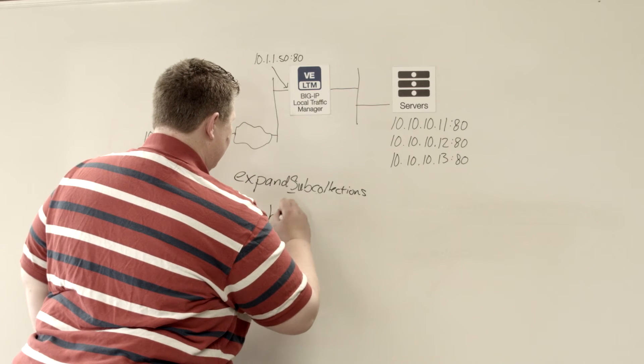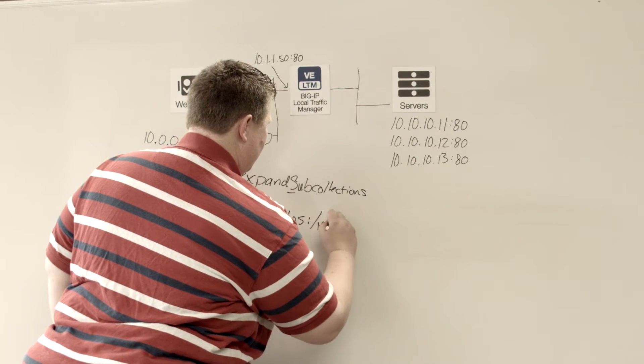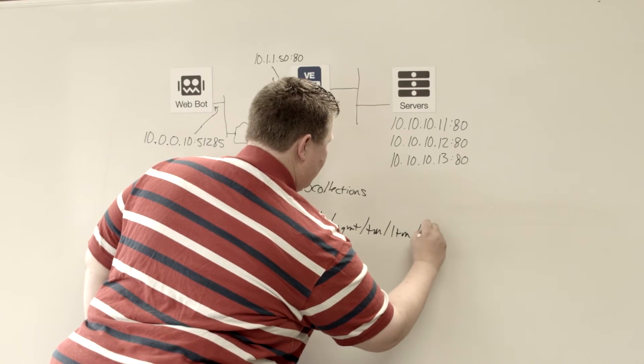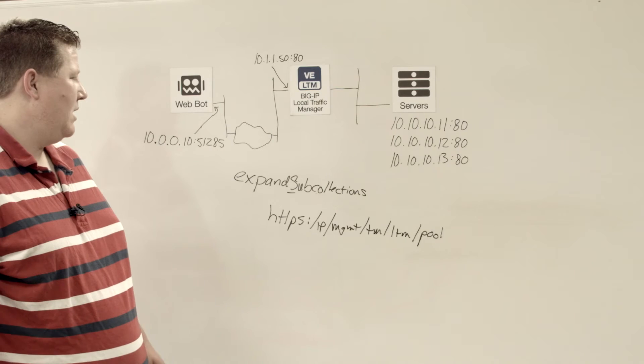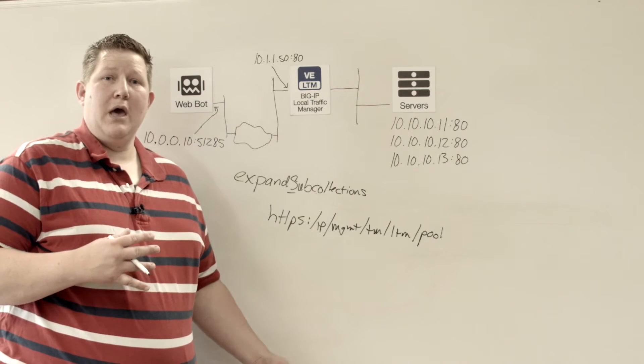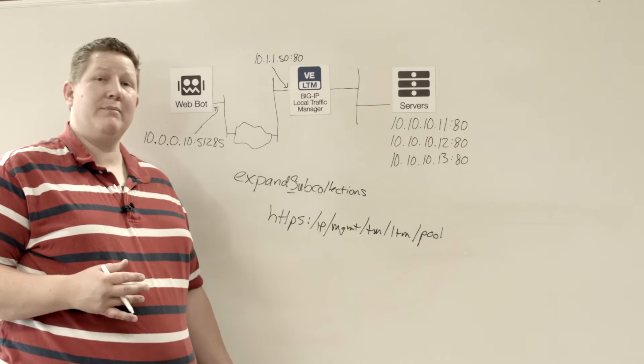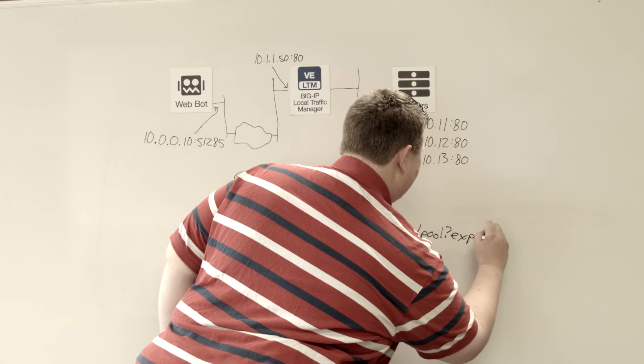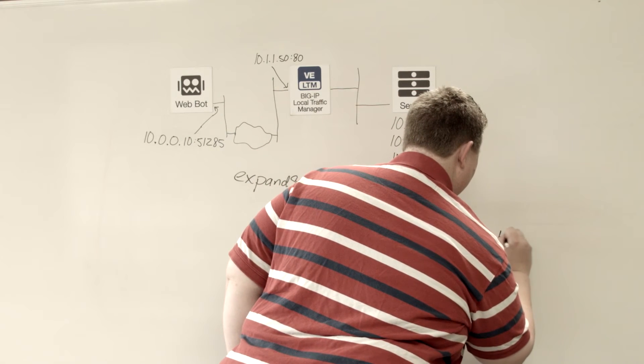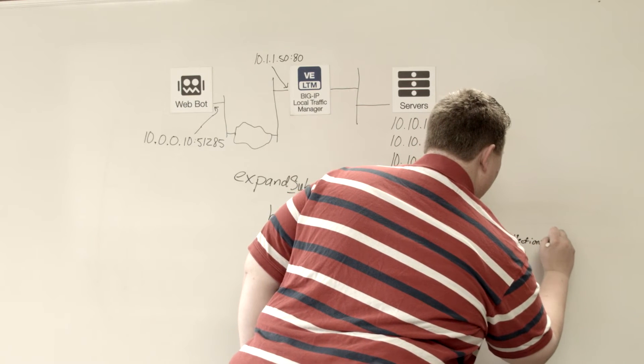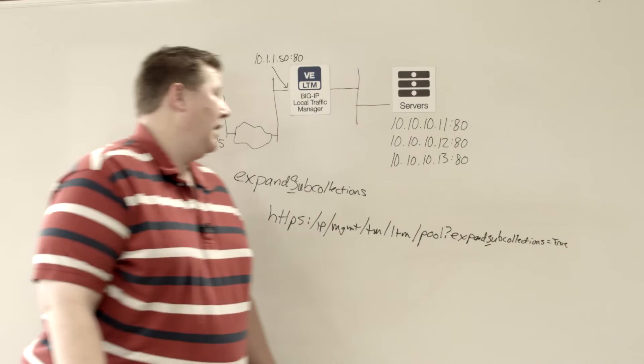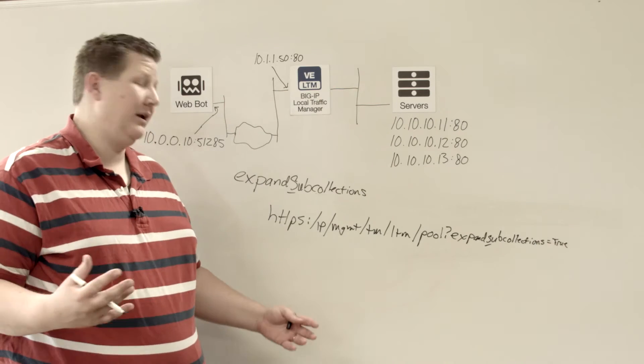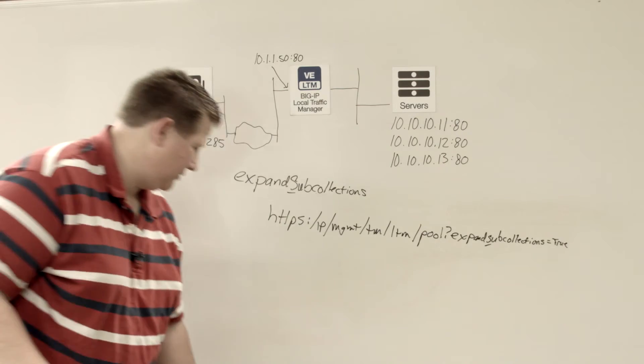So if you make a query, you're going to query all the pools, then you're going to get the results. It's going to show you what the pool is, but it's not going to show you what the pool members are in that, because the pool members are sub-collections. So something you can do is you can add your question mark, and then expandSubcollections equal true, and then when it returns all that pool data, it's going to expand the sub-collection of pool members. So when you get that data back, you're going to actually get the pool members as well.